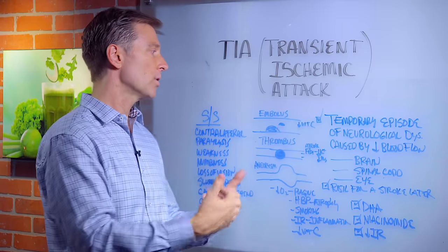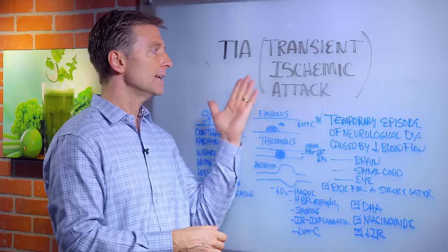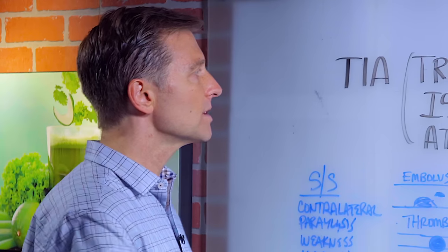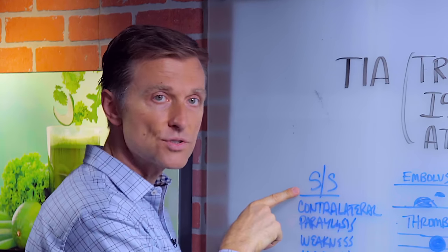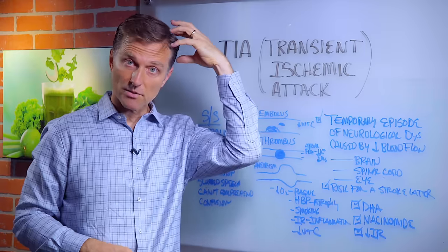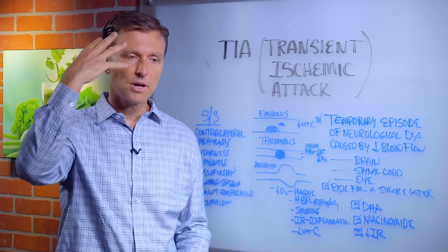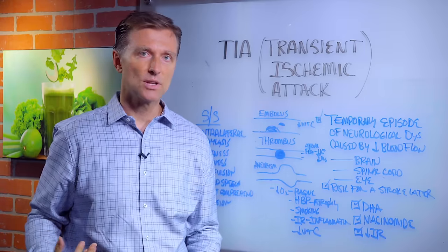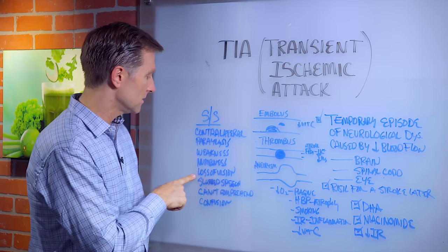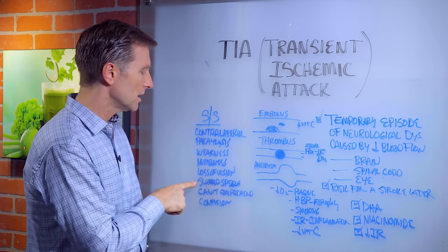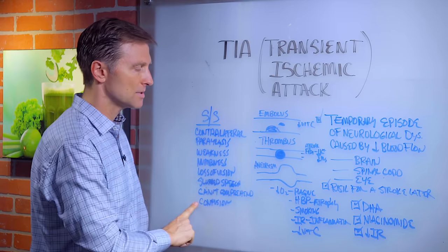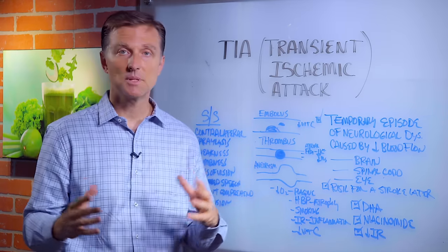It's a risk factor for a stroke — many people that get these end up getting a stroke a little bit later. Some of the symptoms for a TIA or stroke would be contralateral paralysis. So if the stroke was on the left side of your brain, you're going to have problems on the opposite side. Weakness, numbness, loss of vision, slurred speech, can't comprehend, confusion — those are the symptoms. And sometimes there are no symptoms at all.